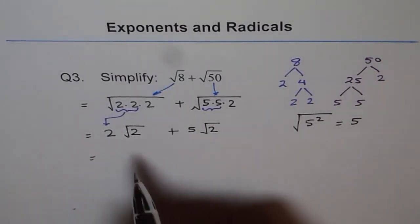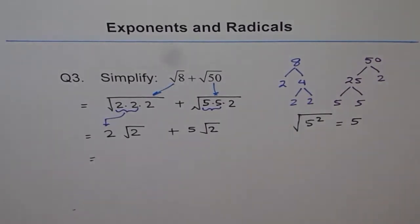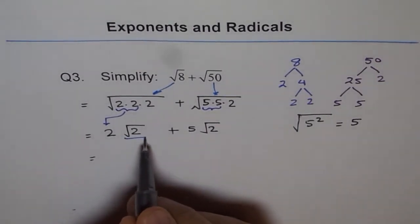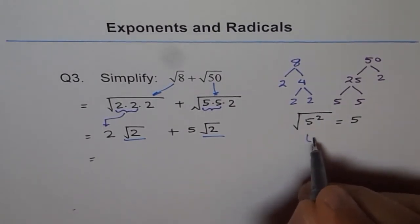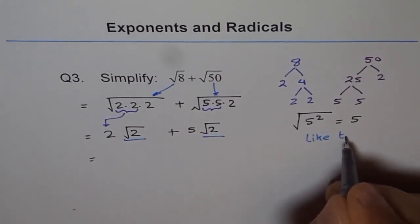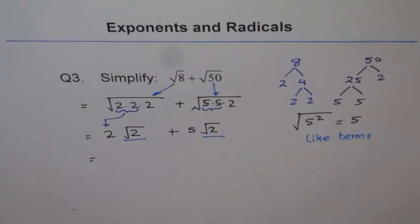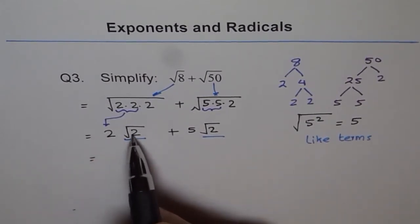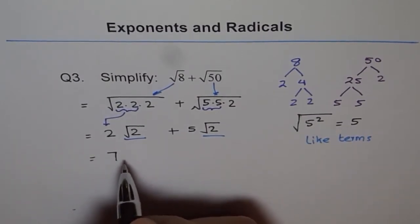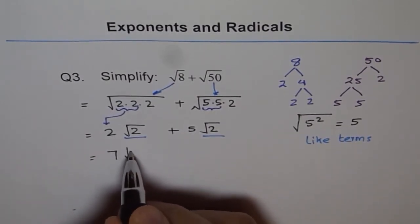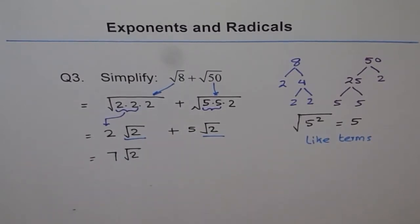Now, you see square root 2 and square root 2. These are like terms. Both have square root 2. So they are like terms. Always think like apples. Then in that case, 2 apples plus 5 apples gives you 7 apples. So that means 7 apples. And apples for us is square root 2. So that is what we get.